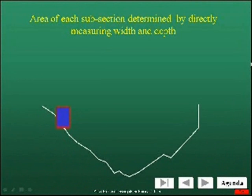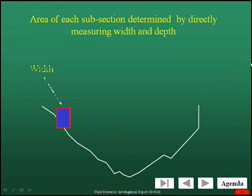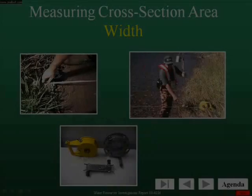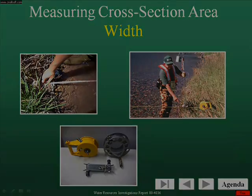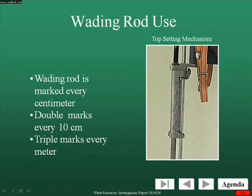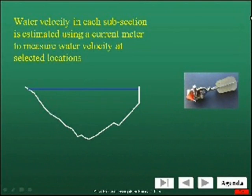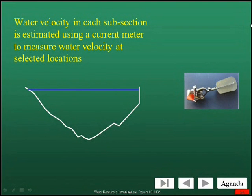One of the first steps to measuring discharge is to find the area of the first subsection. To find the area, you have to measure the width and the depth of the section. The width can be measured using a tagline or a tape measure, and the depth can be measured using a top-setting weighting rod. An important step in using the velocity-area method is that flow must be measured in the middle of each subsection.